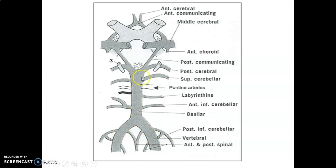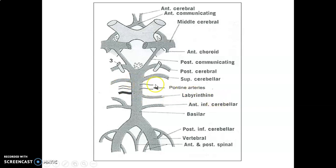The two vertebral arteries join to form basilar. Basilar also gives branches: the first is the anterior inferior cerebellar artery to supply the anterior inferior aspects of the cerebellum. Then we have the labyrinthine artery, which together with the 7th cranial nerve facial and 8th cranial nerve vestibulocochleare passes through the internal acoustic meatus to supply the labyrinth. Then we have pontine branches to supply the pons, and the superior cerebellar artery to supply the superior part of the cerebellum. Basilar terminates as posterior cerebral artery.